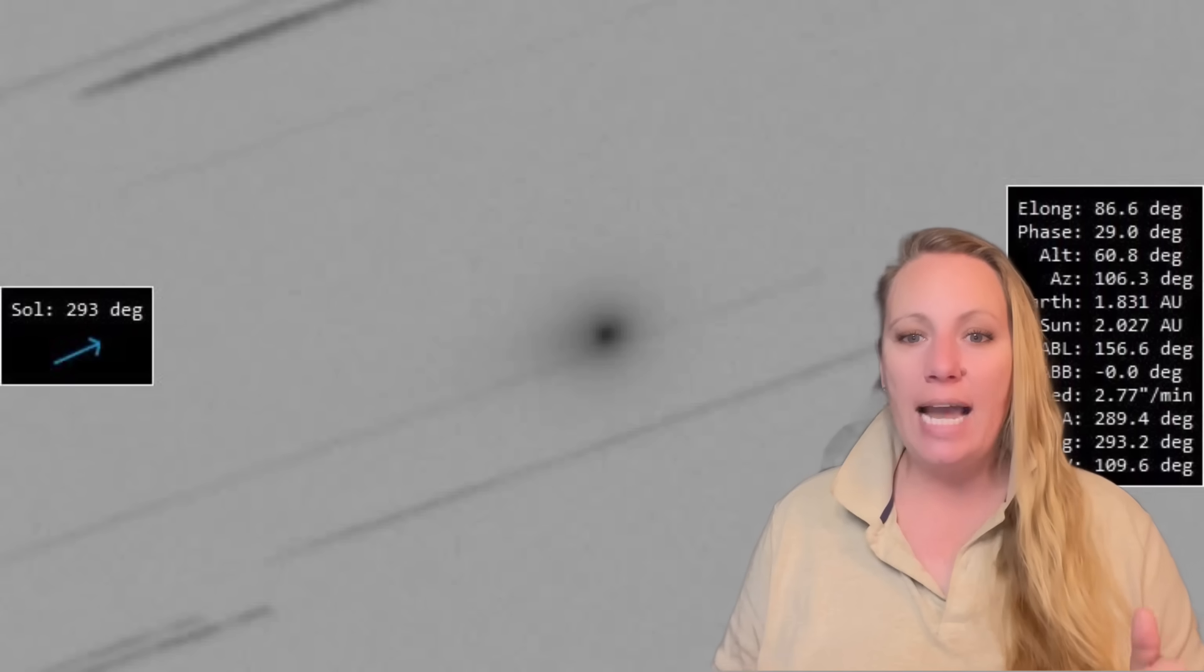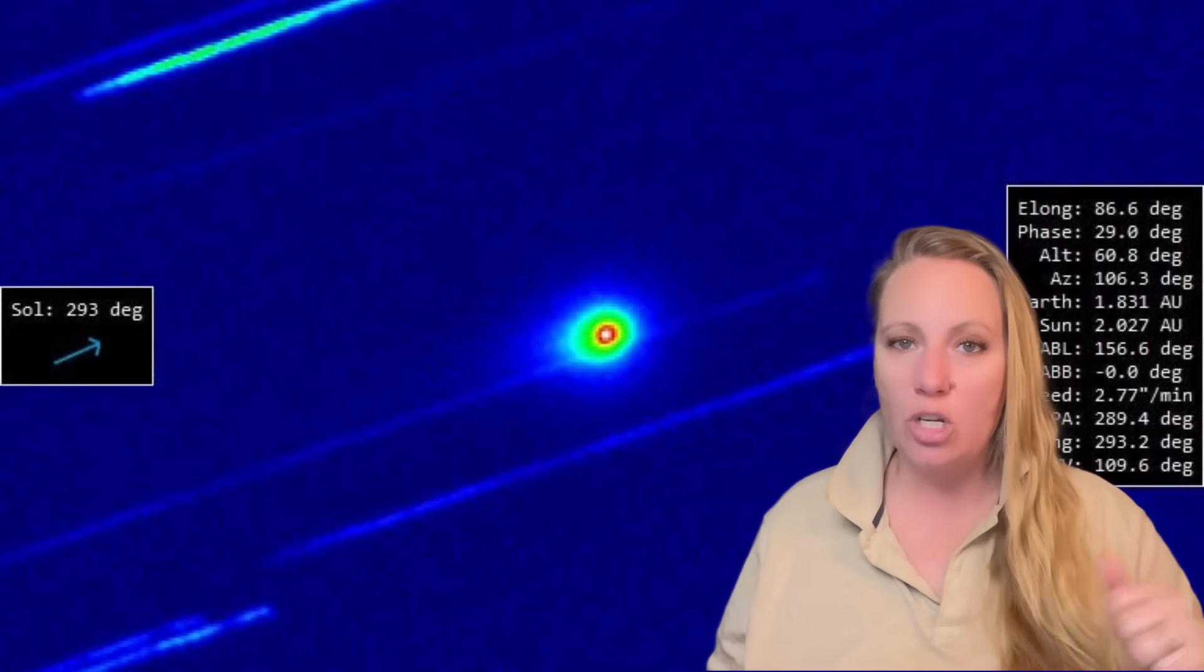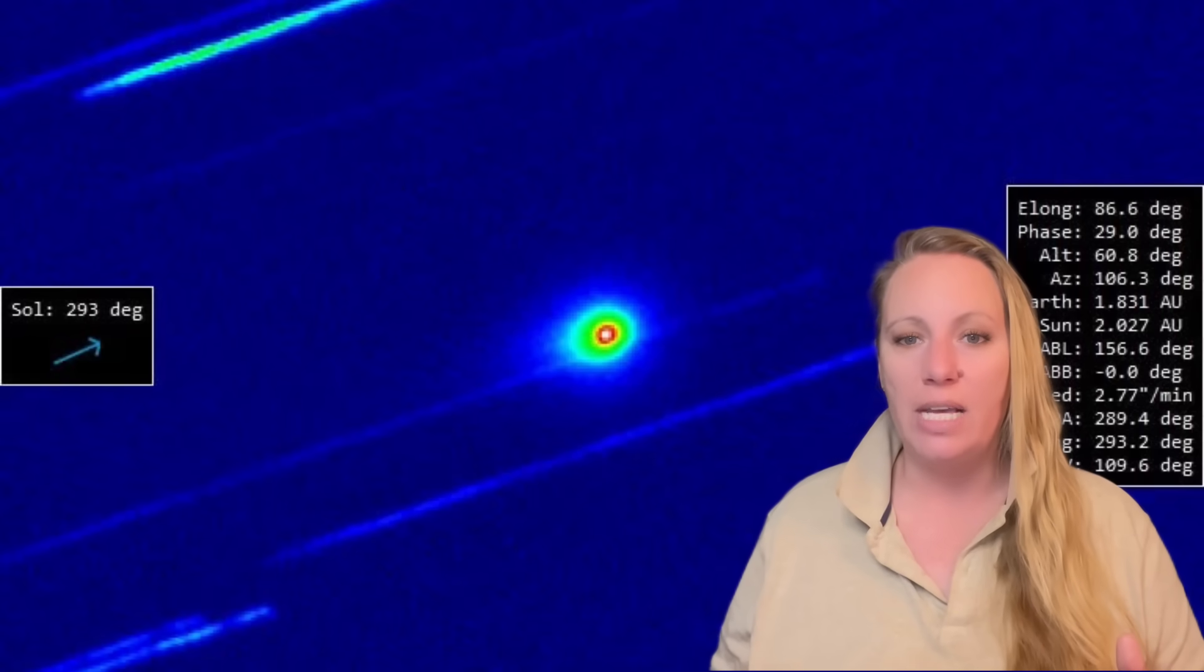Number one, jet pointing towards the sun, not away from it, this anti-tail. Number two, tightly collimated jet. We just talked about this in my last few videos. Then number three, stable jet direction over time. How is this possible?